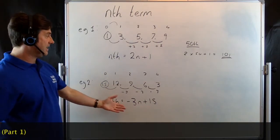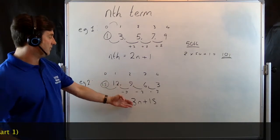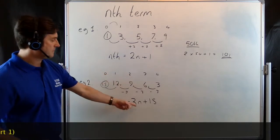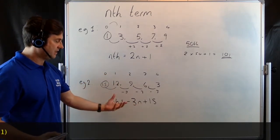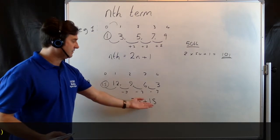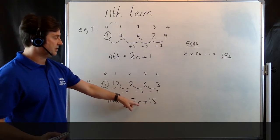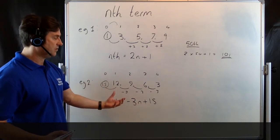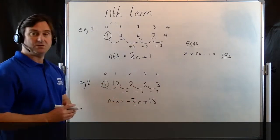Now, let's check it again. Put it into our sequence. We've got the second term. When n is 2, minus 3 times 2 is minus 6. Minus 6 plus 15 takes us to 9. Put it in the fourth term. Minus 3 times 4 gives us minus 12. Minus 12 plus 15 gives us 3. It works.